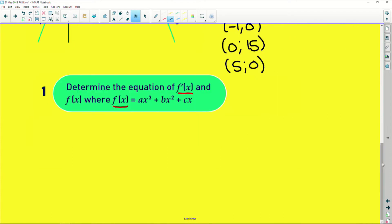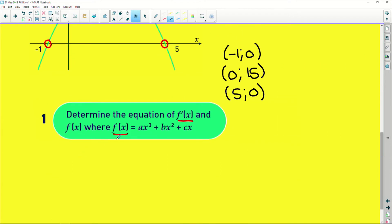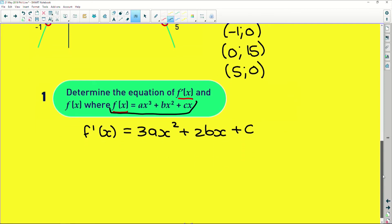Okay, so it says, determine the equation of f prime of x and f of x. Okay, so if we have that f(x) is equal to that situation there, then f'(x) is equal to 3ax² + 2bx + c. Easy differentiation. We also know that f'(-1) is equal to 3a into (-1)² plus 2b into (-1) plus c, and that gives us this y value of zero. So that means that 3a minus 2b plus c equals zero.